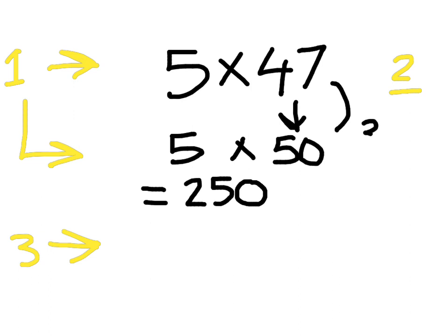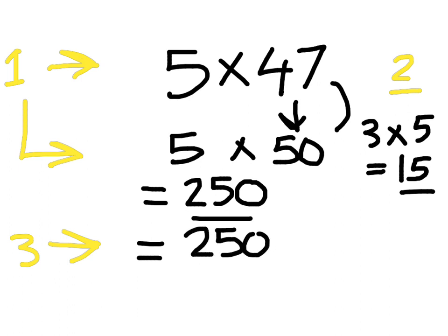The next step was to find out the difference. The difference is 3. So I'm going to multiply 3 by 5. And that is 15. My last step now is to take back what I've given. I gave 3, and when I multiplied that by 5, it gave me 15. So I'm going to take that back. 250 take away 15 is 235.